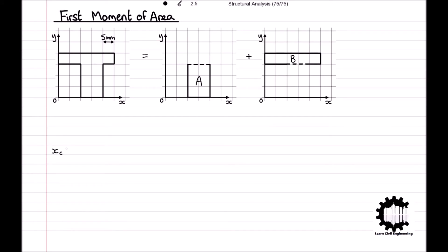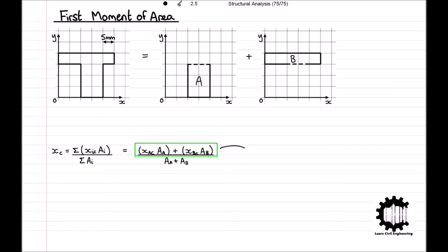We can calculate the X coordinate of the centroid of the entire region by summing the X coordinates of the centroids times the areas for each rectangle, all divided by the sum of the areas — expressed as: (Xc_A × A_A + Xc_B × A_B) / (A_A + A_B). The numerator of this equation is denoted as the first moment of area around the Y axis, since it is computed as a distance from the Y axis given as an X coordinate. The first moment of area relative to the Y axis is denoted as SY, and the X coordinate of the centroid is expressed as XC = SY / A, where A is the total area.